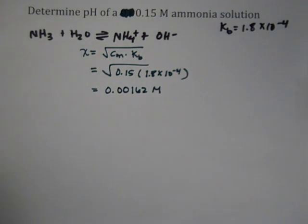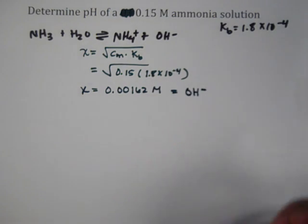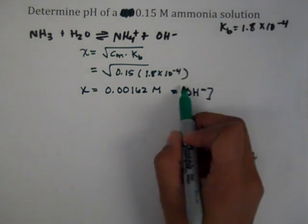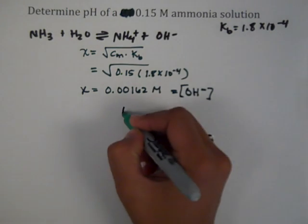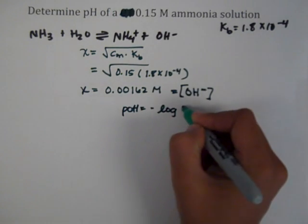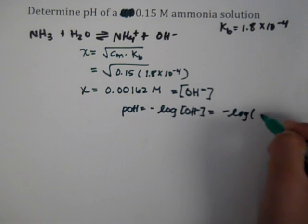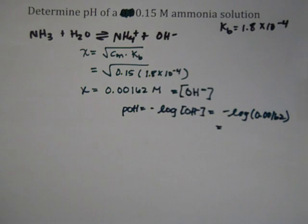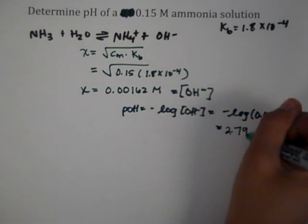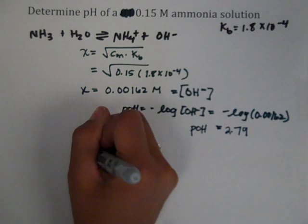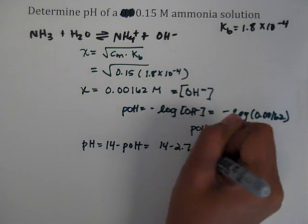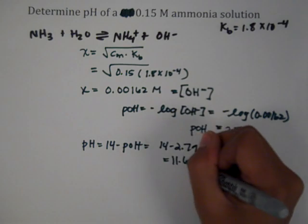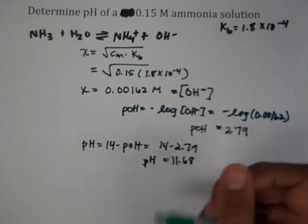Remember, X is the OH- concentration, which is 0.00162 M. We can't go directly to pH, but we can find pOH first. pOH is negative log of OH- concentration, which is negative log of 0.00162, giving us approximately 2.79. Then pH equals 14 minus pOH, so 14 minus 2.79 equals 11.68. We can verify this makes sense since pH should be greater than 7 for a base.